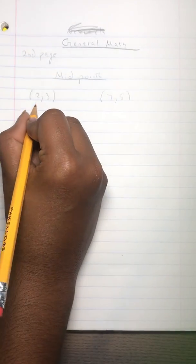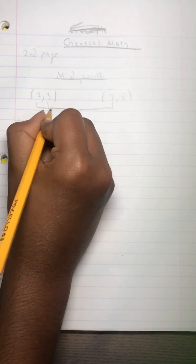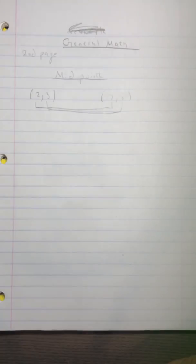What you do now is you add the x values and the y values and divide it by 2 to get your new point, which would be the midpoint.